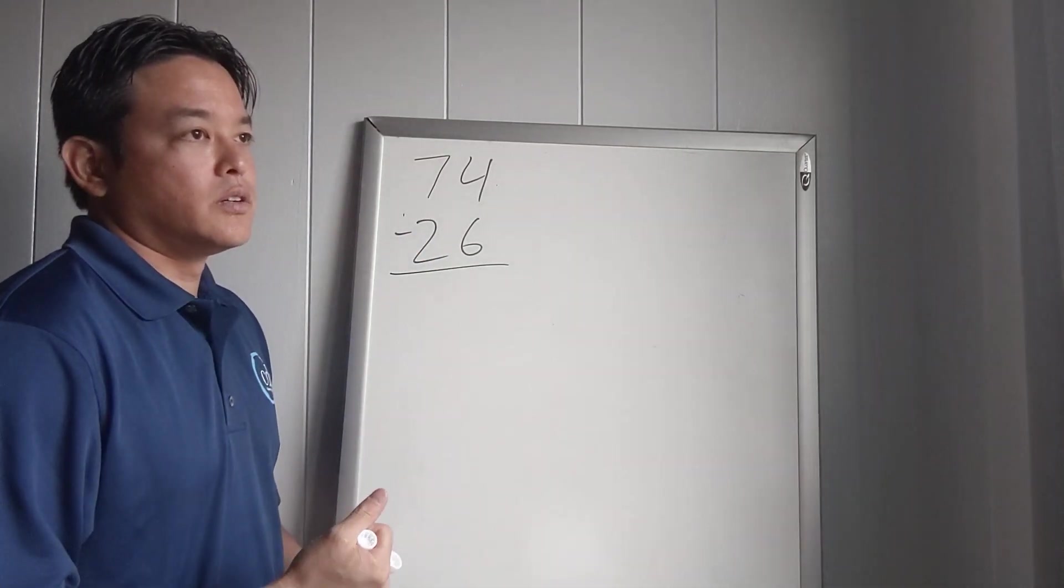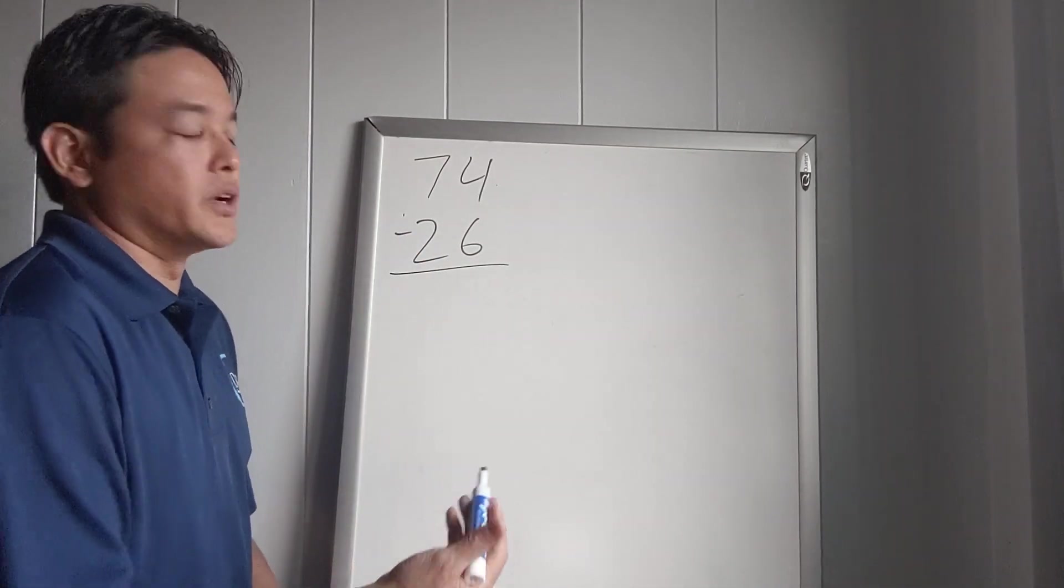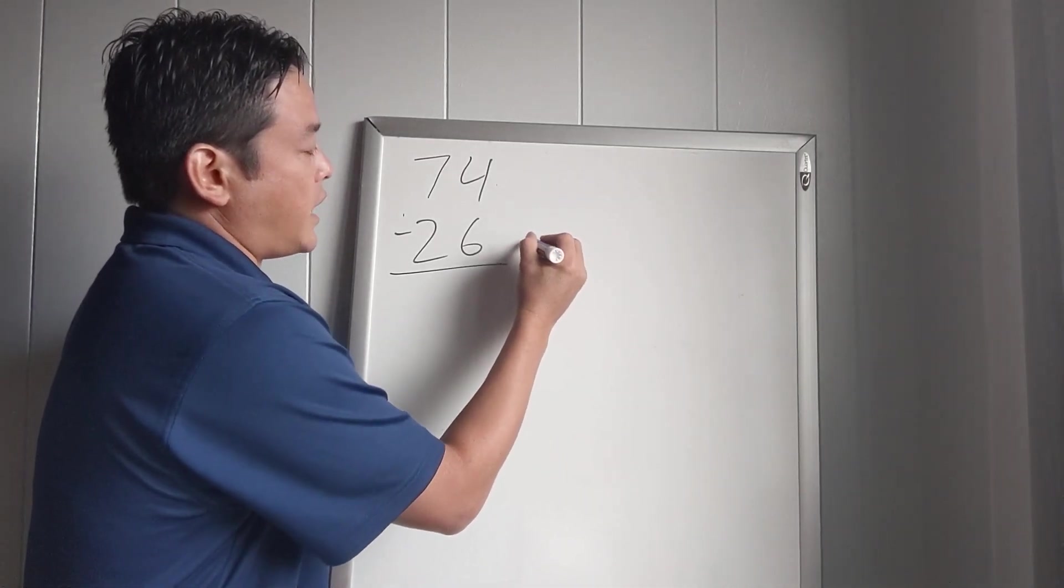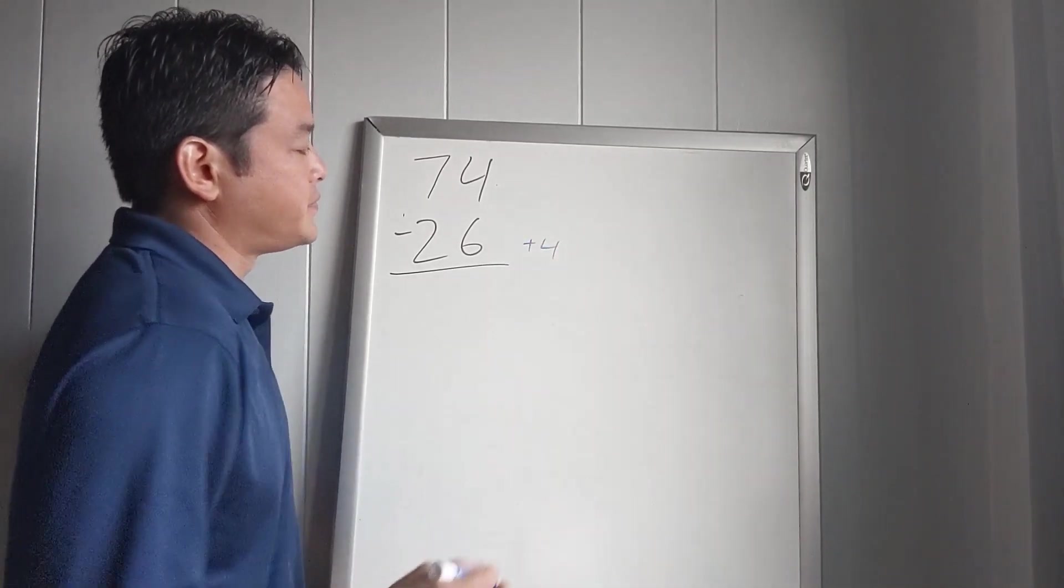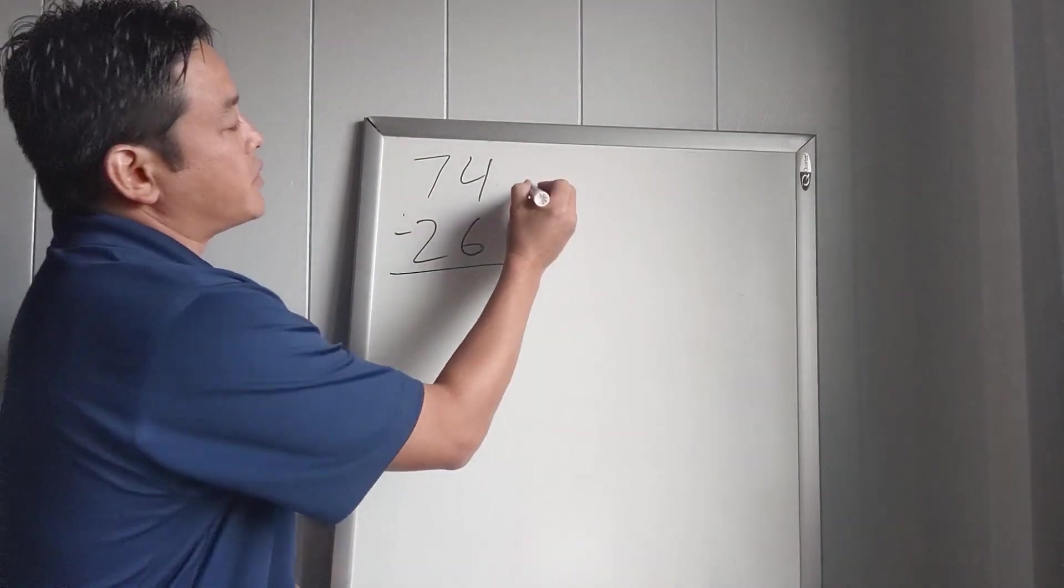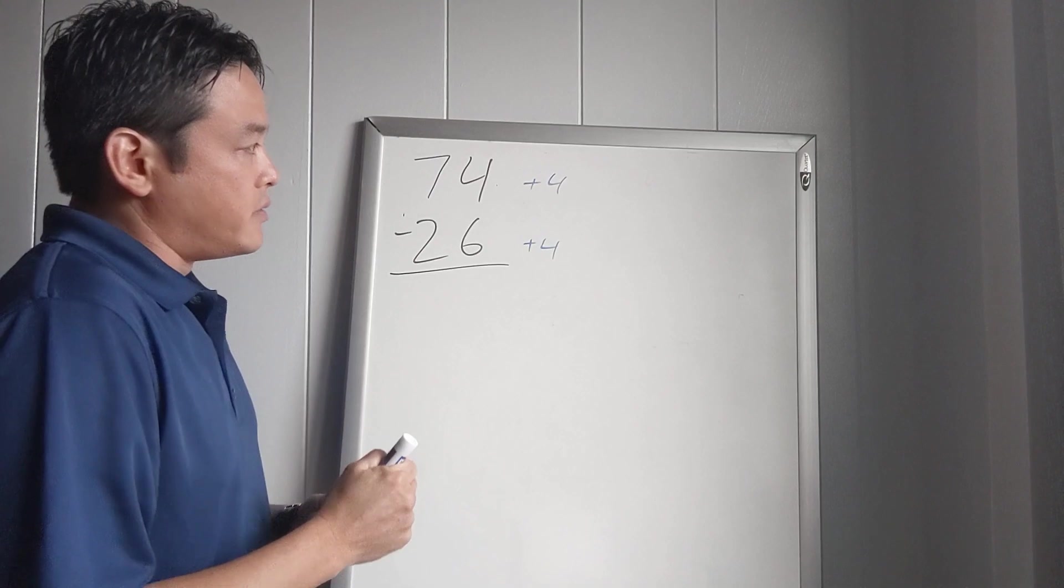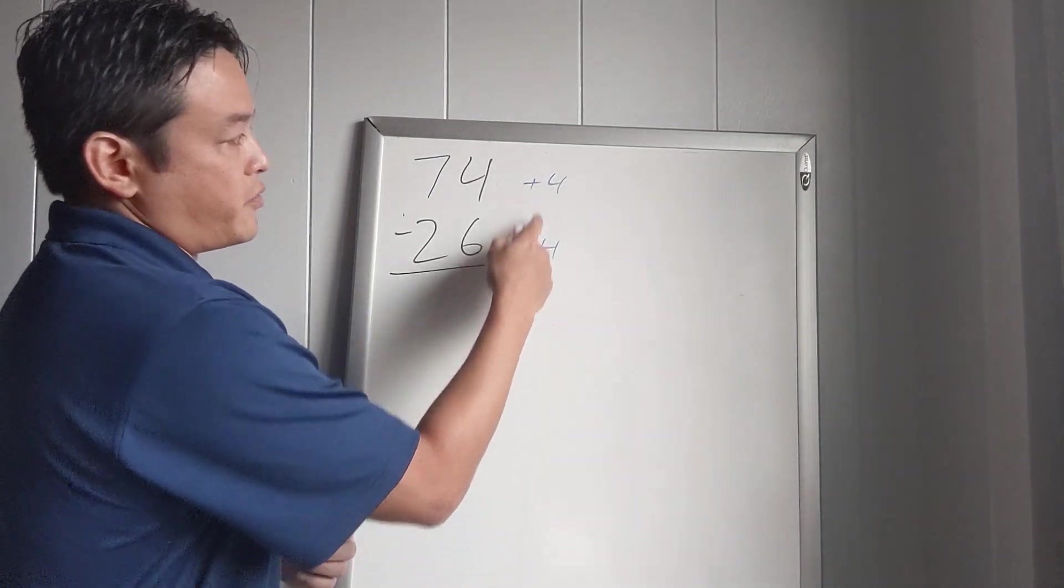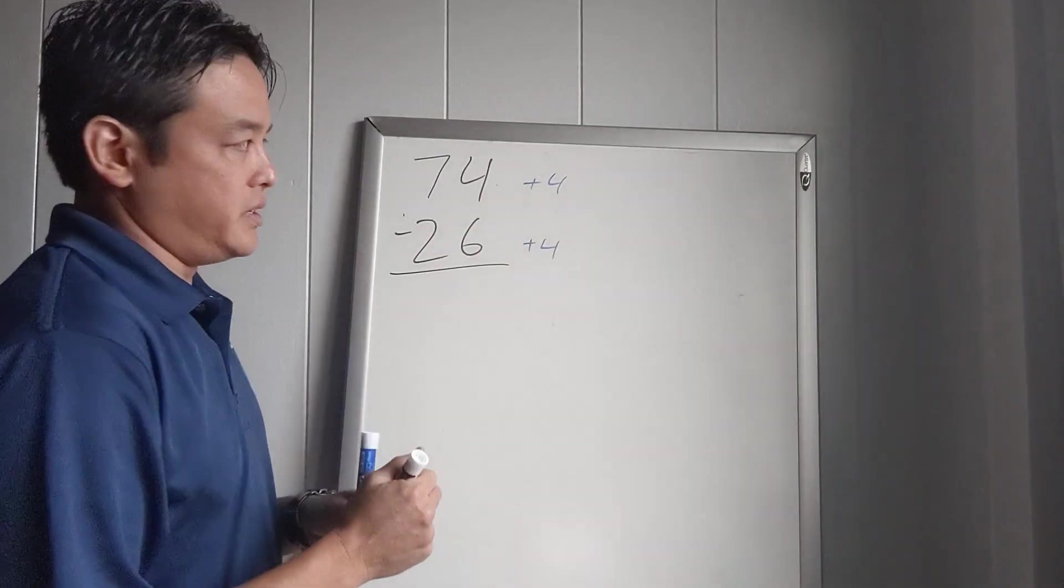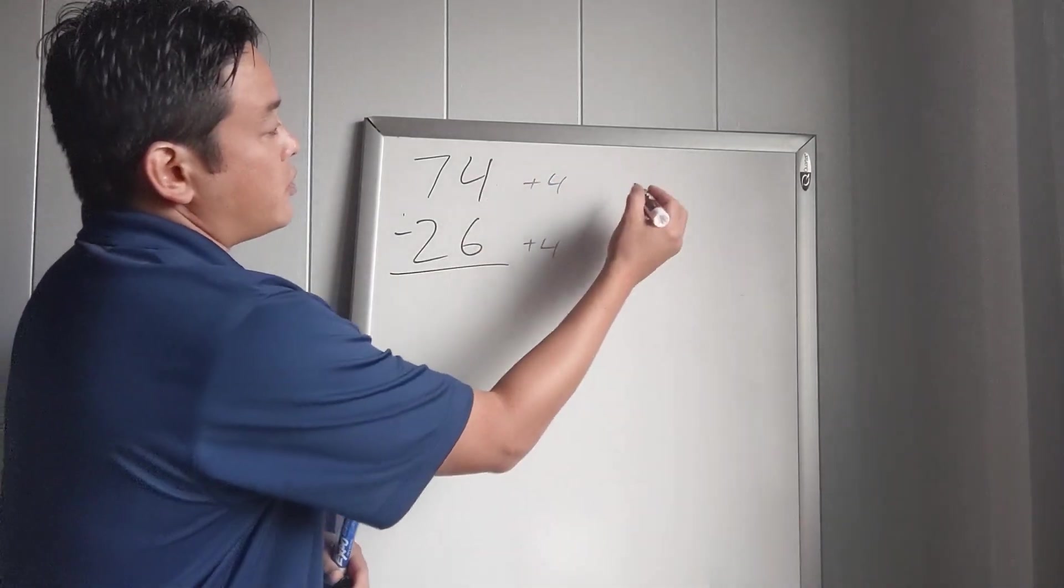To a whole tens number. So here what we'll do is add 4 to get to 30, and then we're going to add 4 to the top because we want to keep the problem balanced. If you change the bottom number by 4, we have to change the top by 4 to keep it even.